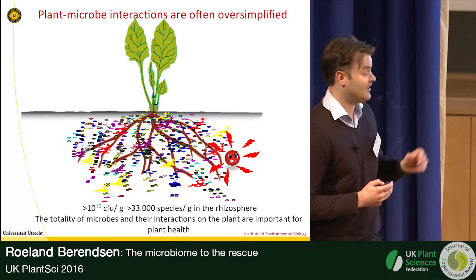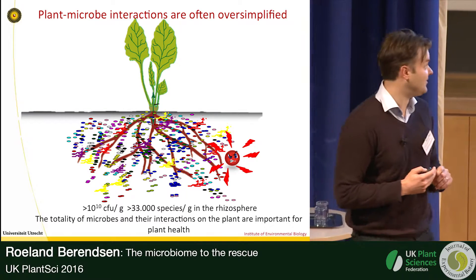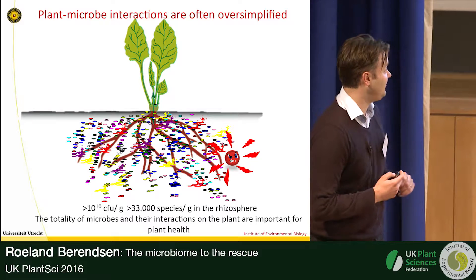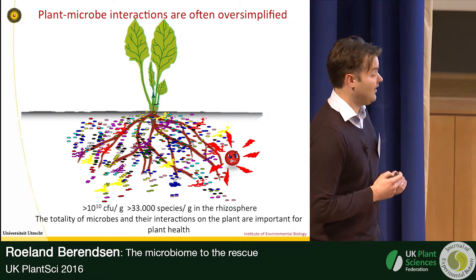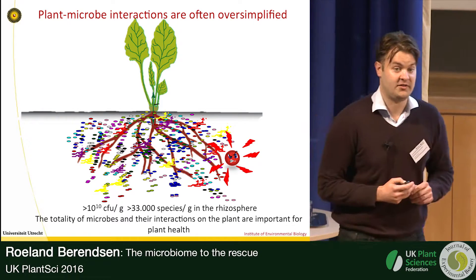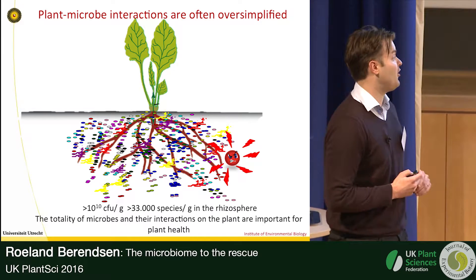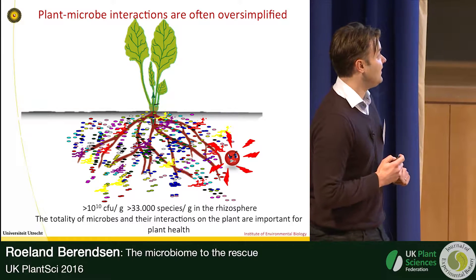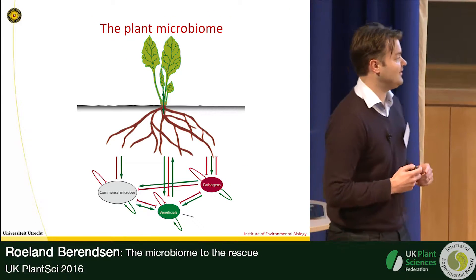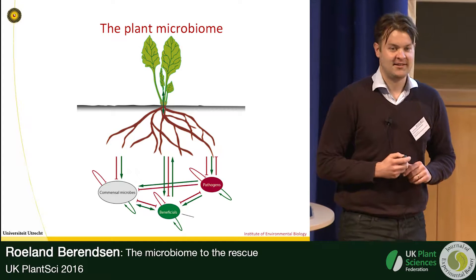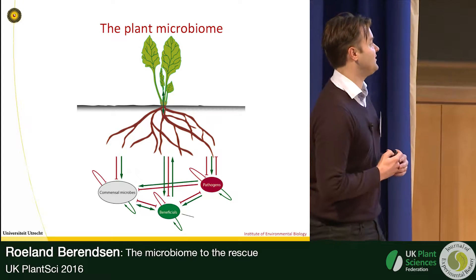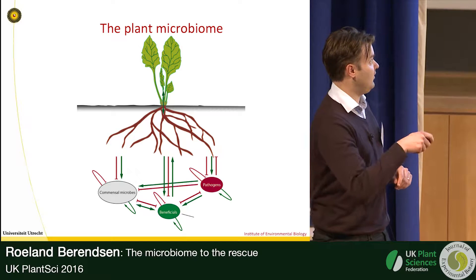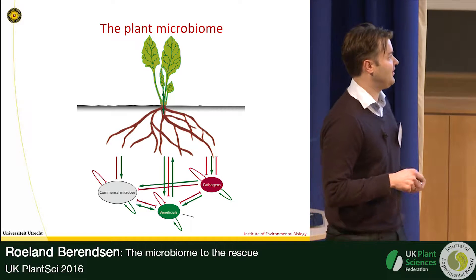There are reports of over 30,000 species per gram of rhizosphere, and I'd like to argue today that it's the totality of these microbes that determines plant health. This is a simplification of this enormous diversity.